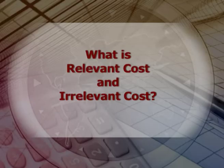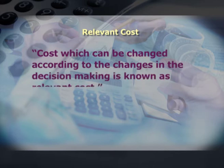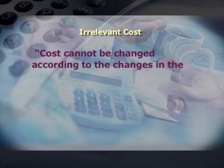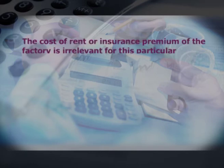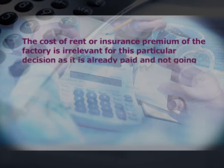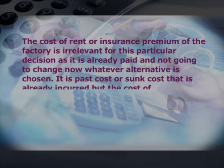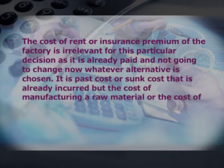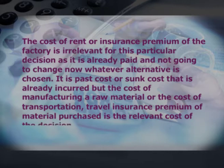A question may arise: what is relevant cost and what is irrelevant cost? Cost which can be changed according to changes in decision making is relevant cost, while cost which cannot be changed is irrelevant cost. For instance, if a business needs raw materials, whether purchased from outside or manufactured in its own factory, the cost of rent or insurance premium of the factory is irrelevant — it is already paid and will not change whatever alternative is chosen. It is a past cost or sunk cost already incurred. But the cost of manufacturing the raw material or the cost of transportation, travel, and insurance for purchased material is the relevant cost.